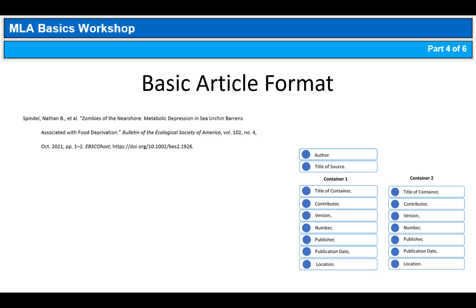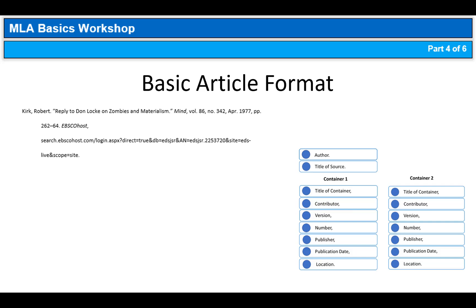Finally, let's look at an article that doesn't have a DOI. We have last name, comma, first name of the author, followed by a period. The title of the article in quotation marks with the period inside the quotes. For container 1: journal title in italics, comma, volume, comma, issue, comma, date, comma, page range, period. Remember, volume is abbreviated as VOL., and issue is abbreviated as NO.